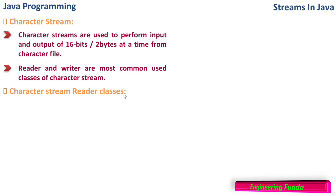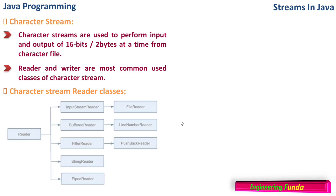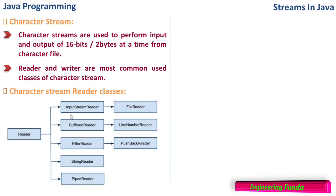Let us focus on the Reader class first. In the Reader class hierarchy, there are classes extending Reader: InputStreamReader, BufferedReader, and FilterReader. InputStreamReader is extended by FileReader, which is used to read files. BufferedReader is extended by LineNumberReader, and FilterReader is extended by PushbackReader.